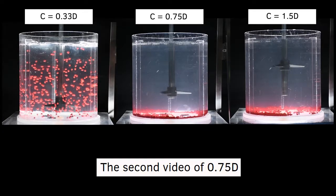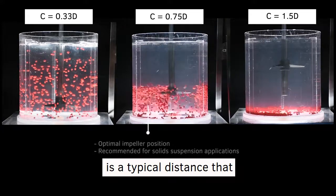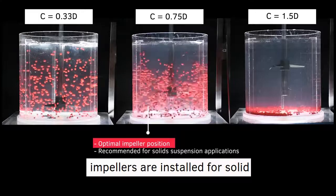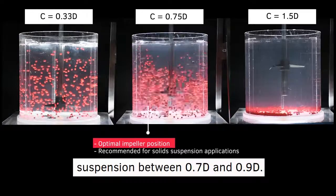The second tank at 0.75D shows the typical distance that impellers are installed for solid suspension, between 0.7 and 0.9D.